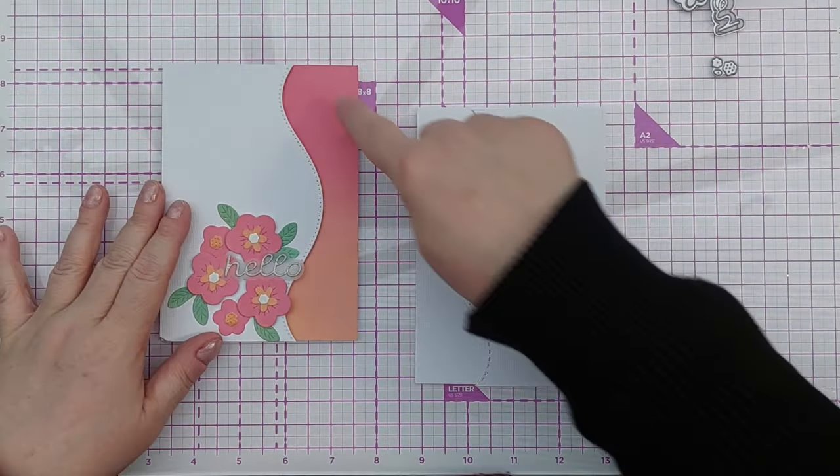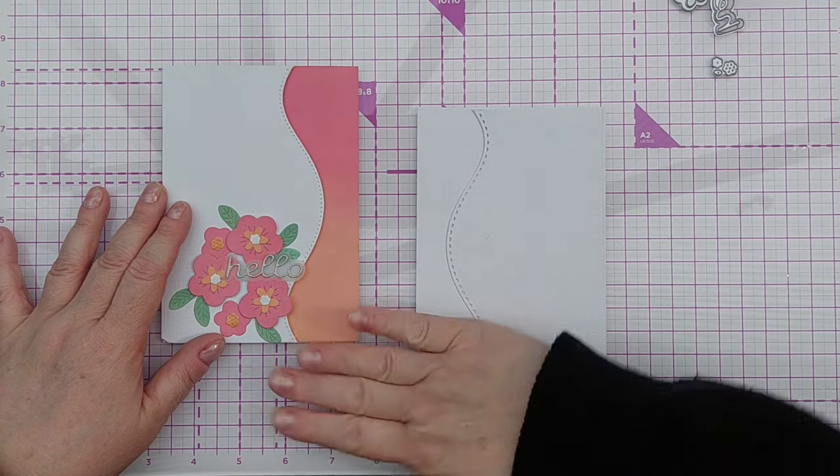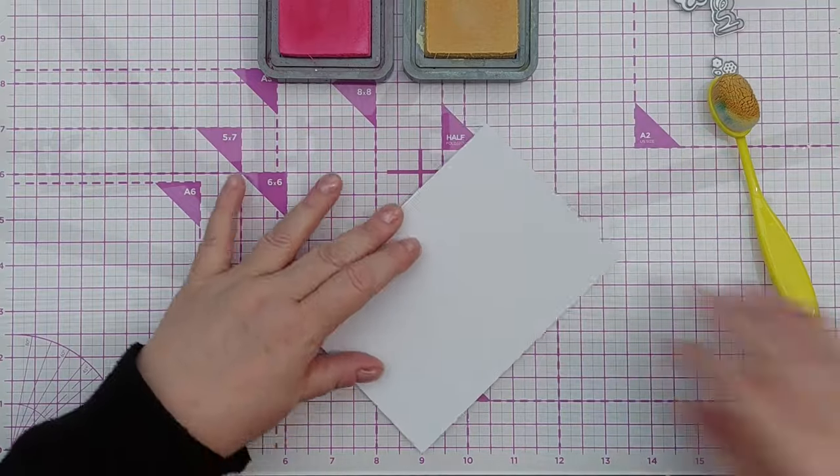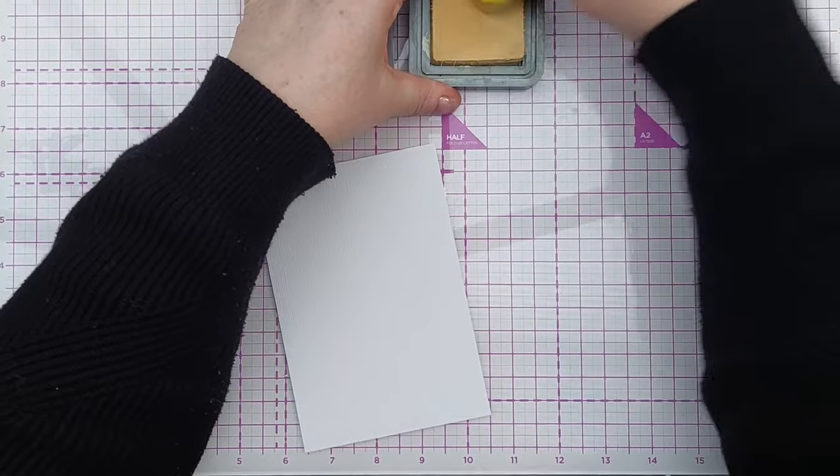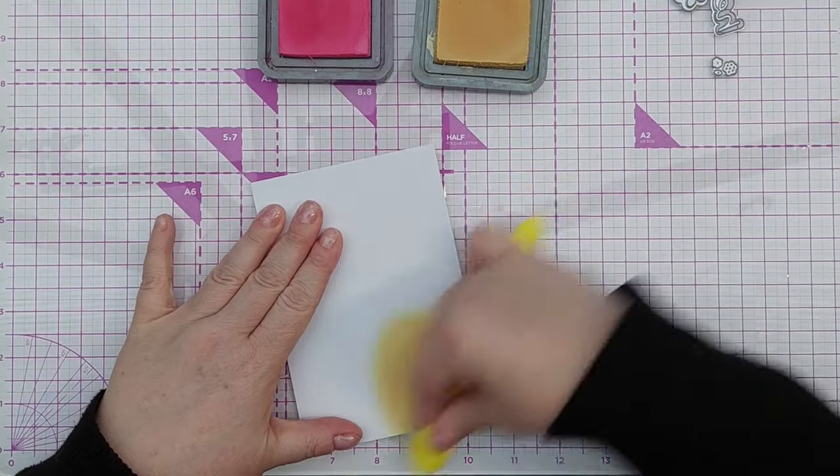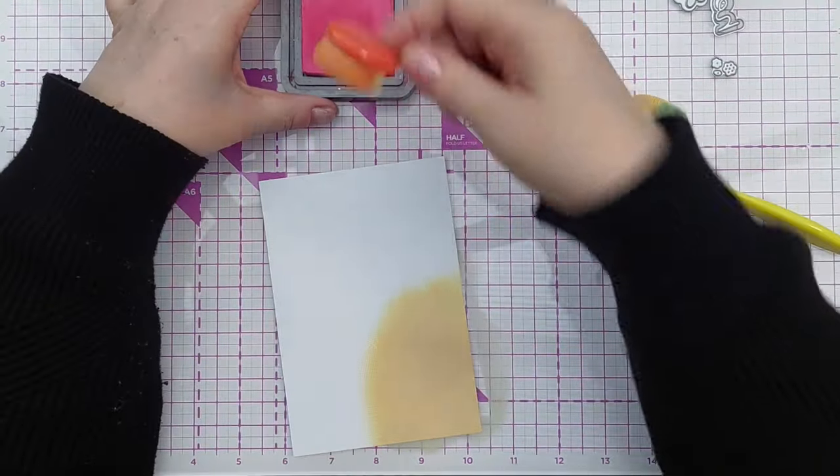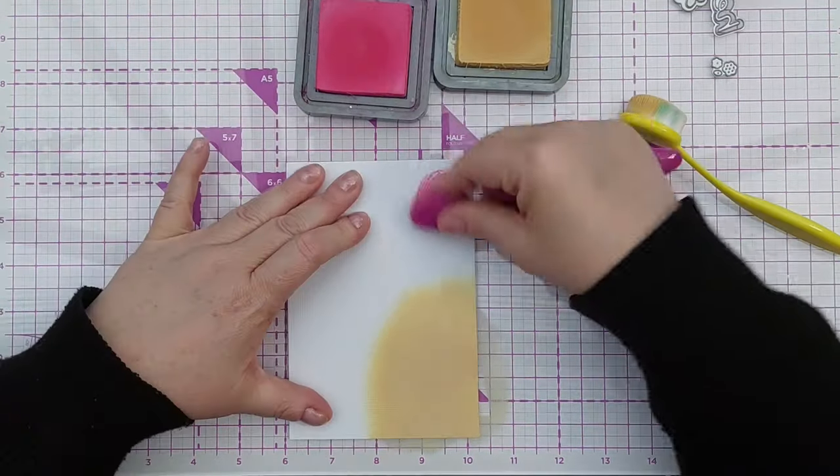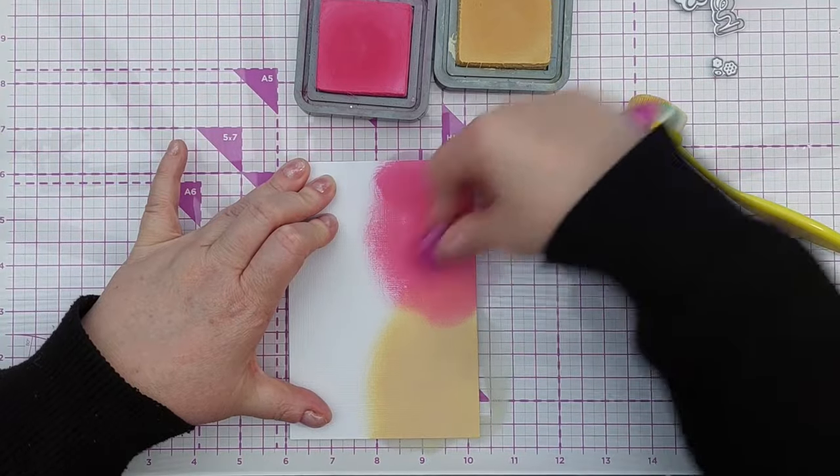For this one I blended worn lipstick and dried marigold and got a nice blend together. For this card I'm going to change the colors up ever so slightly, we're going to have Scattered Straw and then Picked Raspberry. I do like a nice blend of pink and yellow.